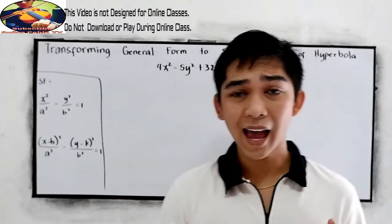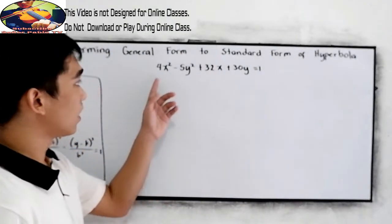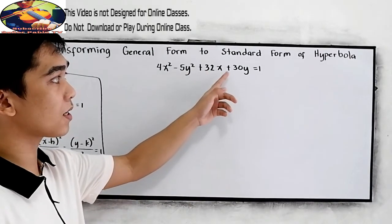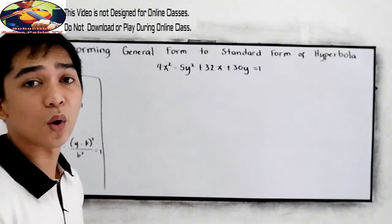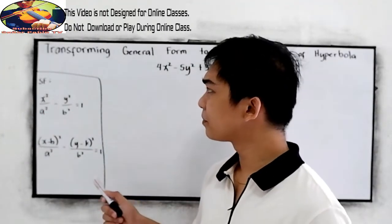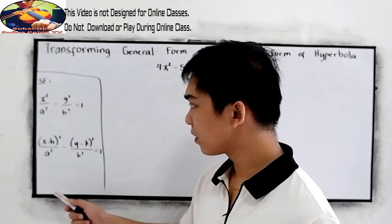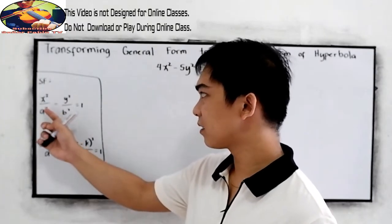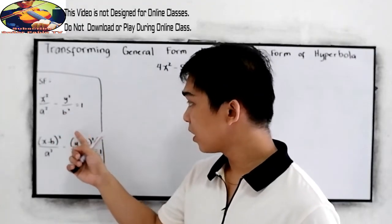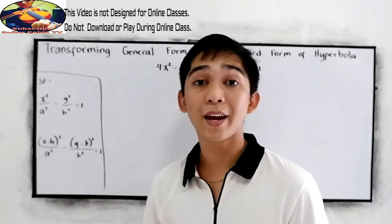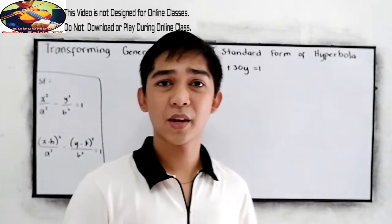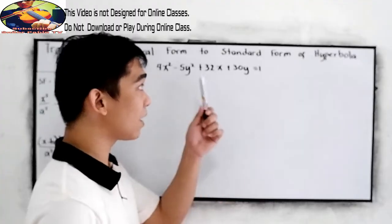So, let's have this problem: 4x squared minus 5y squared plus 32x plus 30y is equal to 1. Put in mind that in our standard form, in (h,k) and if the center is at (0,0), we have a square of a binomial. So, our first step is we need to regroup the given.